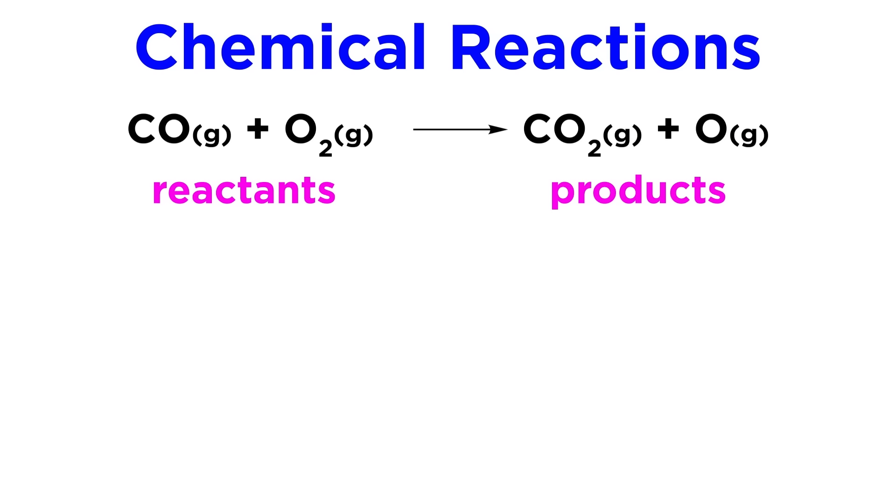For any chemical reaction we must have one or more reactants, and we must have one or more products, where the rearrangement of bonds and atoms is signified by the forward arrow.